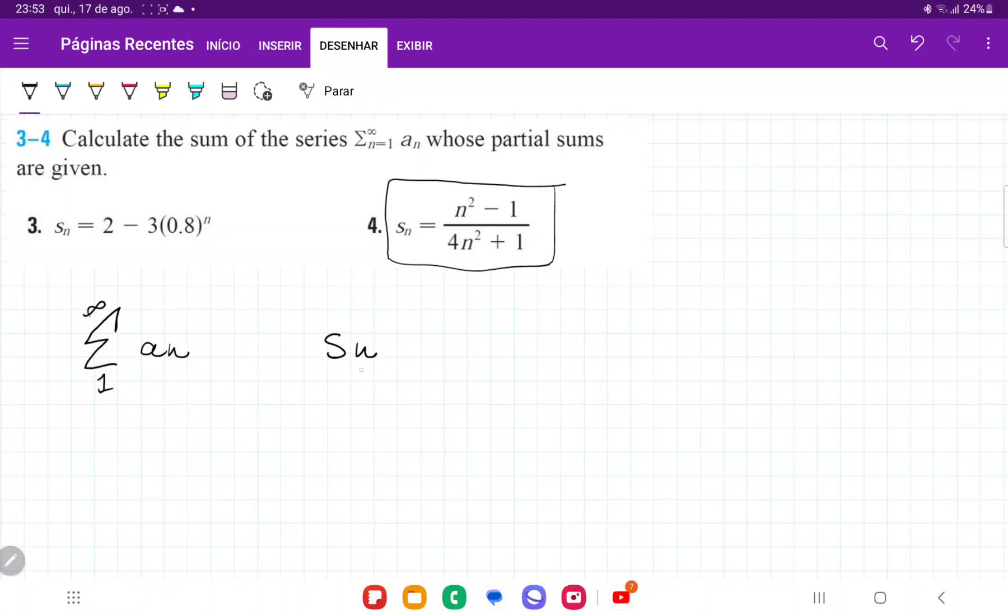We have that the sequence of partial sums is given by n squared minus 1 over 4n squared plus 1.